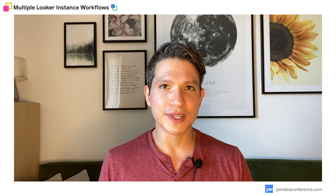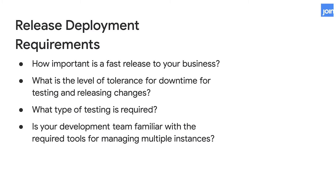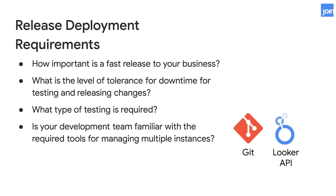Now that we understand how Looker manages Git and content in a single instance, we can move on to understand the benefits of having additional instances. Some key questions to help guide you: how important is a fast release to your business — should new explorers and content be released daily or monthly? Is it acceptable to have temporary downtime while content is being fixed, or do you always want managed content that's always functioning? Do you want to test all content including user-defined content? Are you going to be testing query performance, SQL validation and new features in isolation? And last, the requirements: Git and the Looker API.